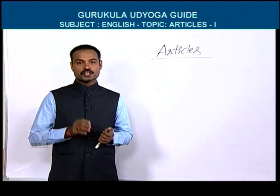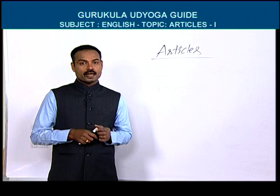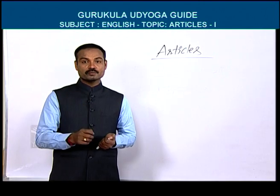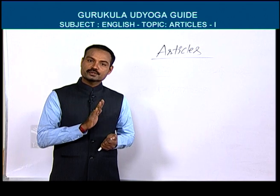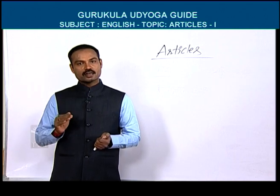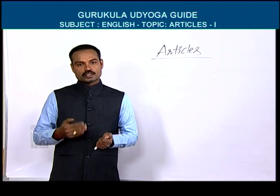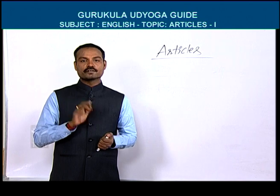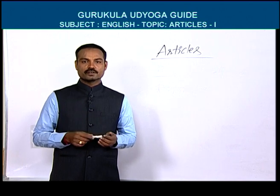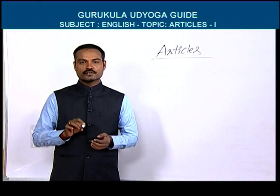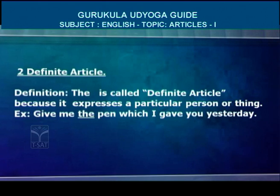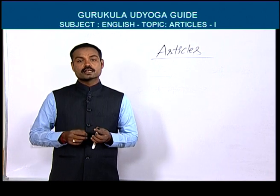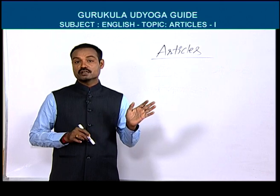Now I am going to give you a clear explanation of why a and an are called indefinite and why the is called definite article. When we use either a or an in any sentence, that sentence cannot give us definite meaning — that is why a or an is called indefinite article. The is called definite article because it can express a definite meaning when used in any sentence.